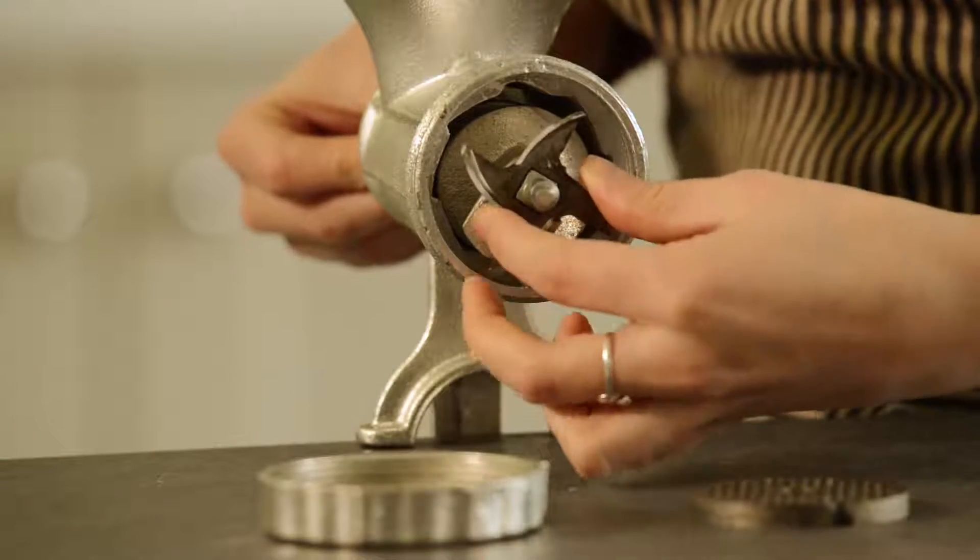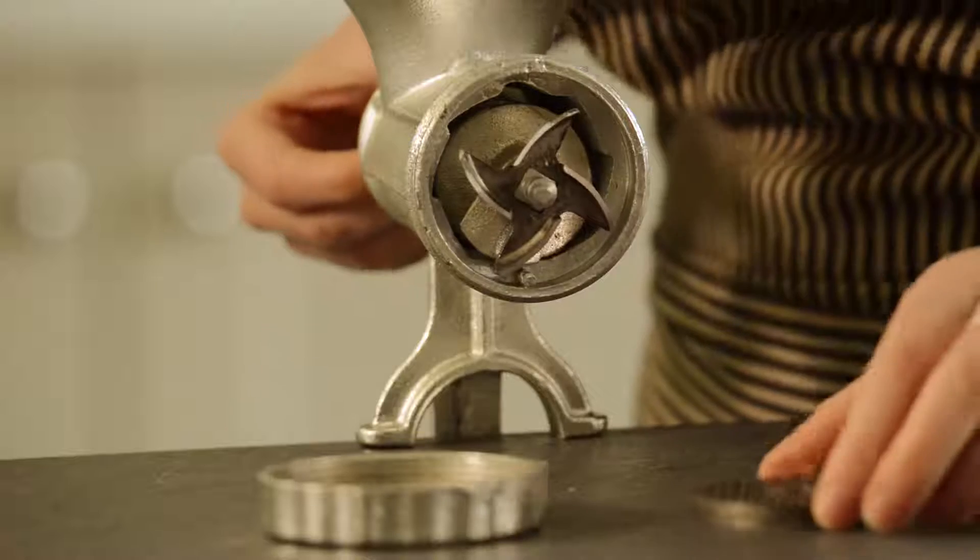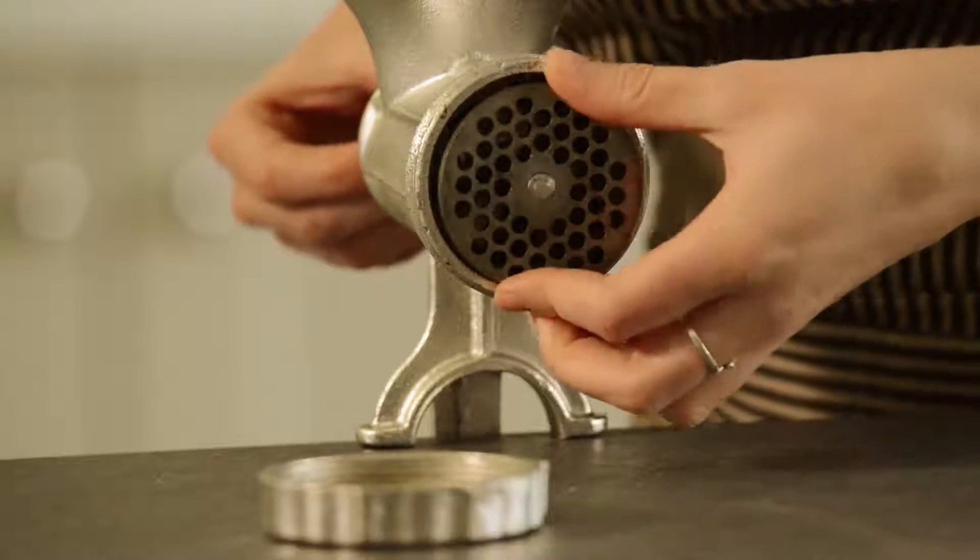Attach the eye screw to the end of the auger with the blade facing outwards and lock in place using the grinding plate.